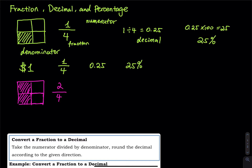2 over 4 is the same thing as 2 divided by 4, which equals 0.5. So 2 over 4 is a fraction, 0.5 is a decimal. For the percentage, you take 0.50 times 100, which equals 50. So 2 over 4 is the same thing as 50%.